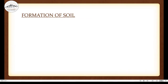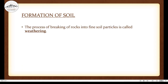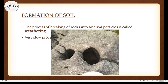Where does soil come from? It must not have just always been here. Let's see how soil was formed. The process of breaking of rocks into fine soil particles is called weathering. Note that this is not weathering as in climate or rain and sun — this is a different kind of weathering, meaning the breaking of rocks to form soil. It is a very slow process, taking hundreds and thousands of years.